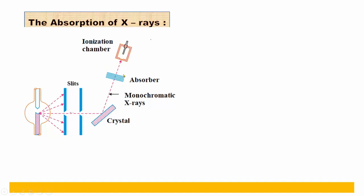In the second case, when an absorber of particular thickness is placed in the path of the x-ray beam, absorption takes place depending upon the thickness of the absorber, and a lower intensity beam enters the ionization chamber. Gas ionization takes place again, and the electrometer shows a deflection. Experimental observations show that when the absorber is present, the electrometer shows less deflection, and when the absorber is absent, it shows more deflection.